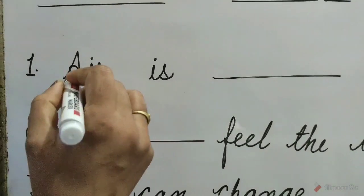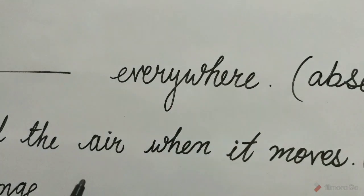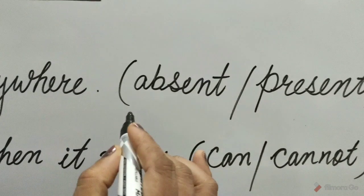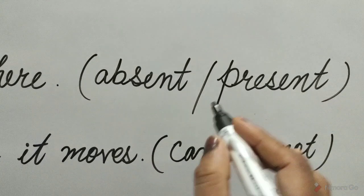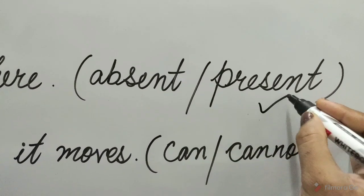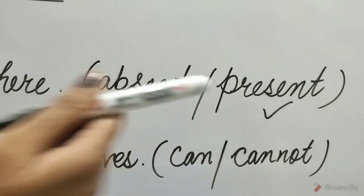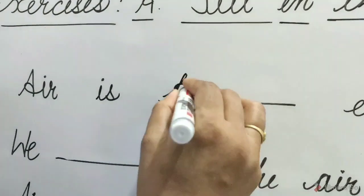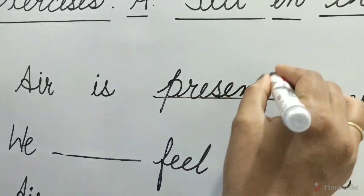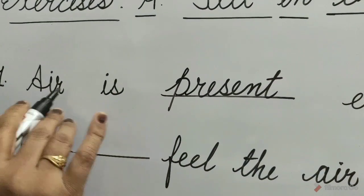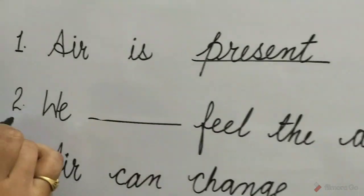First, air is dash everywhere. The options are absent and present. Present option is correct. So we write here: Air is present everywhere.